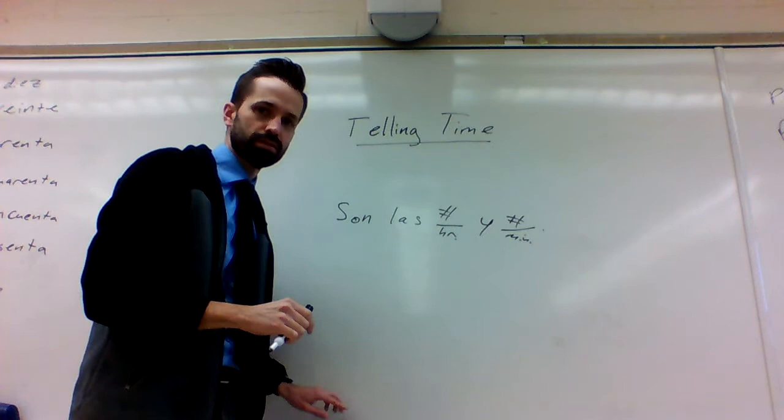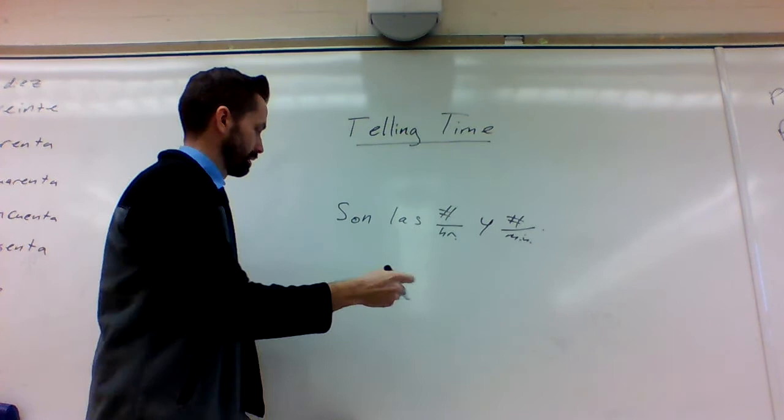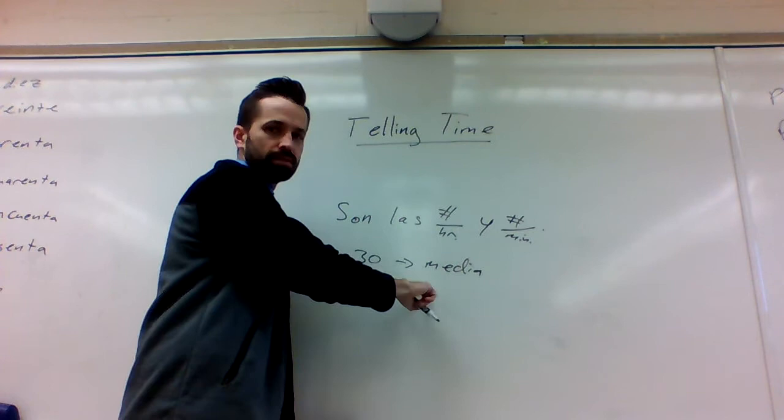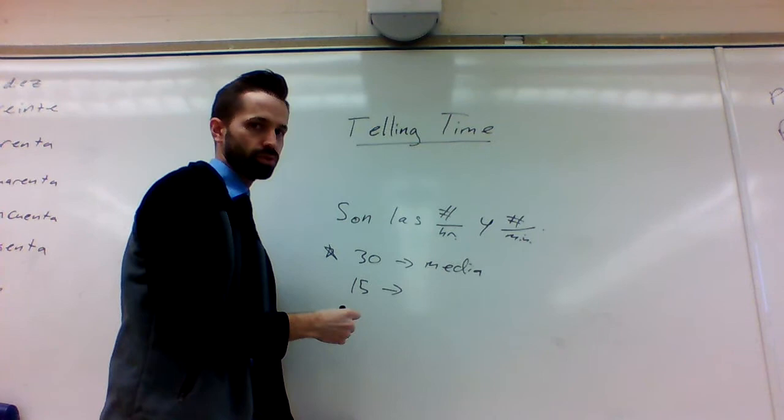But there are a couple special numbers. So for example, if you have 30 minutes, instead of saying the number 30, you use the word for half, which is media. Note that that's media and not medio. And then 15 minutes is a quarter of an hour. So you use the word quarter instead of 15, which is cuarto.